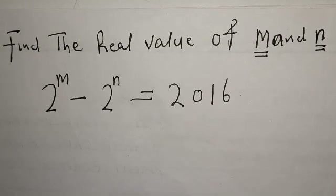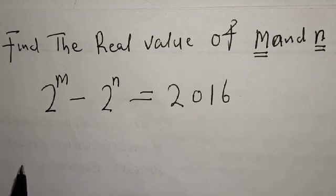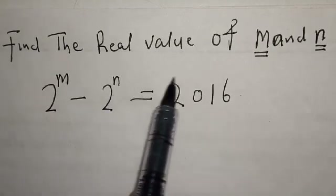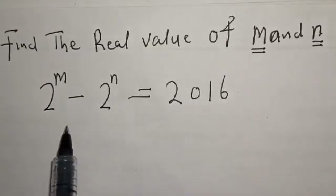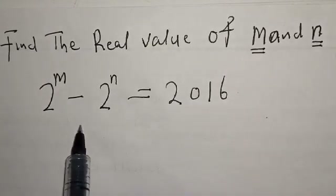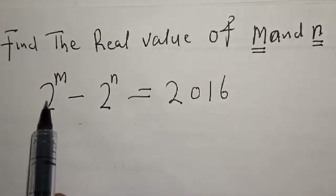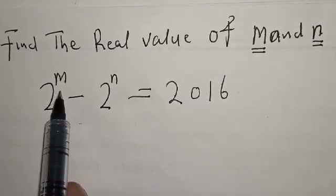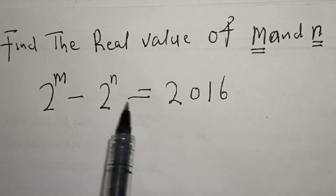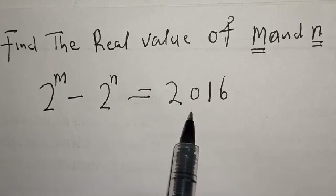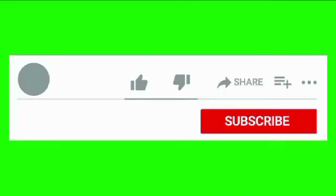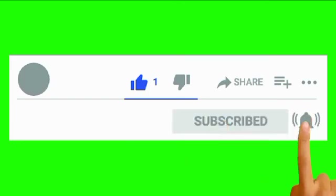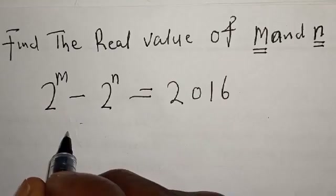Hi, welcome to my class. In today's class we want to look at how we can find the real value of m and n from this given equation: 2 raised to power m minus 2 raised to power n is equal to 2016. But before I proceed, please don't forget to like, share, comment and subscribe. Solution.